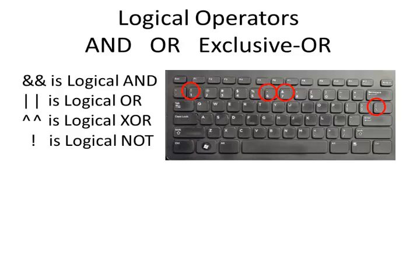In C, C++, and the curly brace languages, the logical AND is represented by two ampersands, and the ampersand is like on the shift 7. The logical OR is represented by two vertical bars, and that's over there by the enter key.